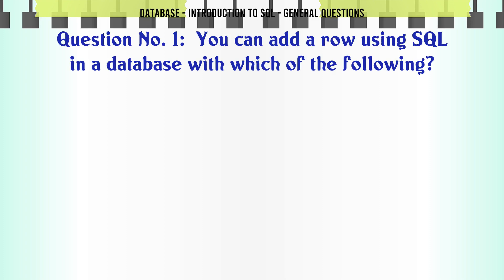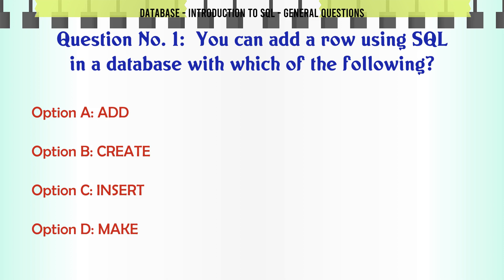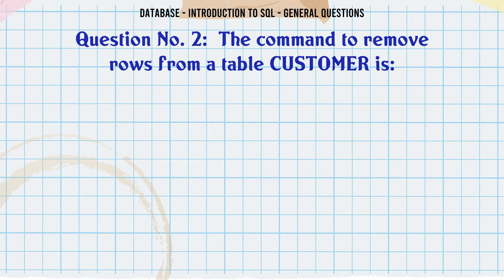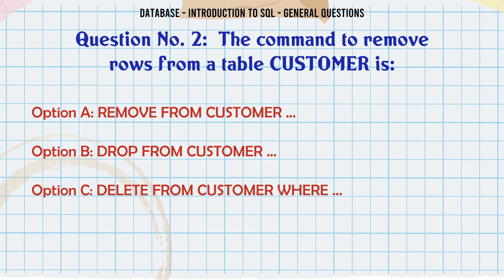You can add a row using SQL in a database with which of the following? A. Add. B. Create. C. Insert. D. Make. The correct answer is Insert.